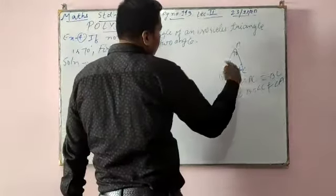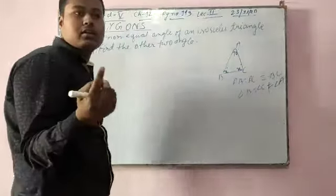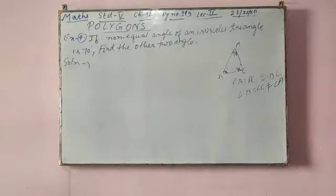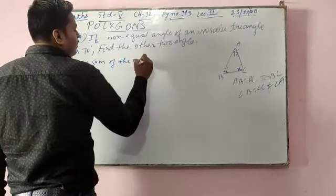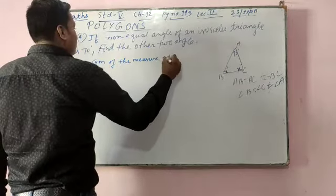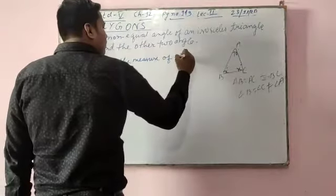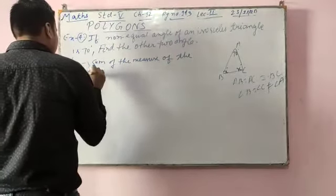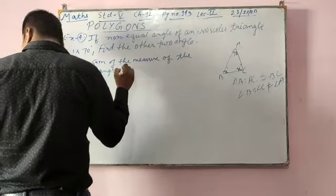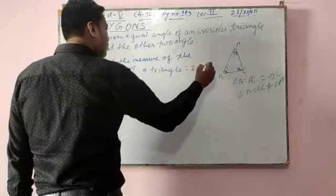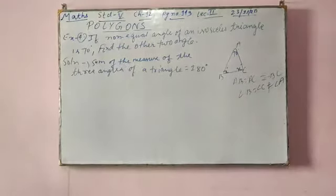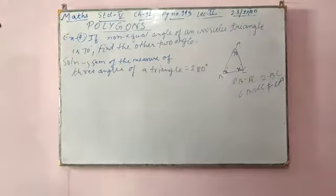If the non-equal angle is 70 degrees, you have to find the other two angles. You know that whatever angle one equal side has, the same angle will be on the other equal side. The sum of the measure of the three angles of a triangle is 180 degrees — write this in every question.